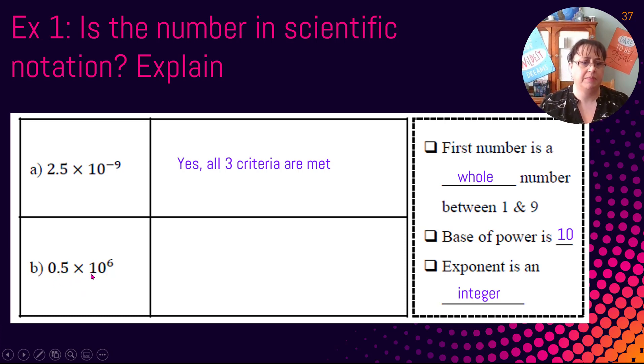If we look at B, we have 0.5 times 10 to the negative 6. And the first number - when we say the first number, we're talking about that number in front of the decimal. We don't care what happens after the decimal. It's just that number in front of the decimal that matters. And the number in front of the decimal is a 0. 0 is not between 1 and 9. So right there, nope, it's not scientific notation. We only need one of those things to fall apart to be able to say no. So our answer is no. The digit in front of the decimal is not between 1 and 9.